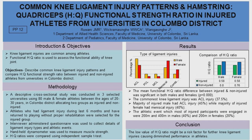The functional HQ ratio was significantly lower in the injured group compared to the non-injured group. In conclusion, a low functional HQ ratio might be a risk factor for further ligament injuries in athletes and will diminish performance levels. I suggest using this functional HQ ratio as a tool in the rehabilitation process.